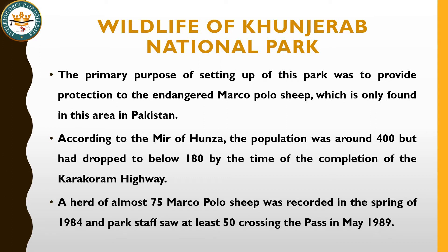The primary purpose of Khunjerab National Park was the conservation of Marco Polo Sheep. The previous population had dropped to about 400. When the Karakoram Highway was built, the number dropped further. Many Marco Polo Sheep migrated to China and their number was reduced in Pakistan. 75 Marco Polo Sheep were seen in the spring of 1984, and by the end of May 1989 the number had crossed 500, though they were seen crossing into China as well.